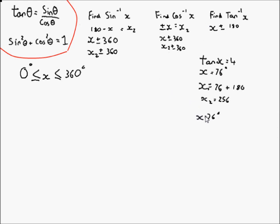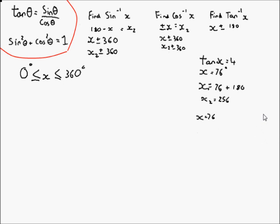So tan x equals 4 gives x equals 76 and x equals 256. On exam papers, to stop you using your calculator, they'll look for you to show x equals 76 plus 180, so it's good habit to show that equals 256 — knowing these rules rather than relying on the calculator.